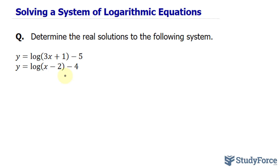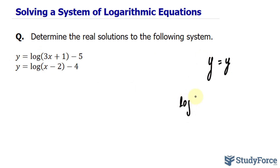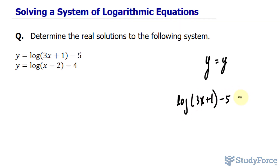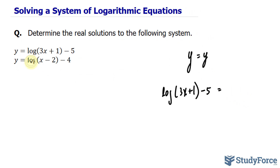The good thing about these two equations is that we have y isolated in both situations — y is equal to here and the same case for the other equation — which means that we can set the two y's equal to each other. So we set y equal to y: log(3x + 1) minus 5 is equal to log(x minus 2) minus 4.